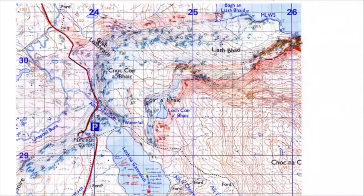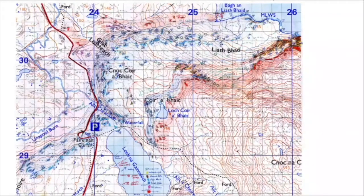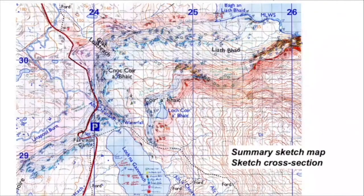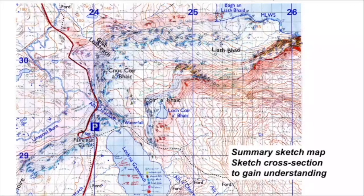So I want to try and get an overview of the structure that we can see on the map. We can do this by building two distinct products: one is a summary sketch map, the other is a sketch cross section. The reason we want to generate these is to gain a qualitative understanding of where the boundaries are, what their rough orientations are, how they relate to one another, and we can then use that to build more precise versions once we have that qualitative understanding.